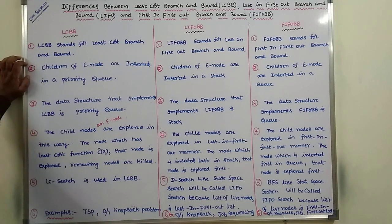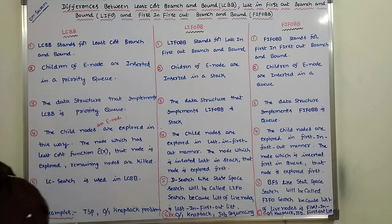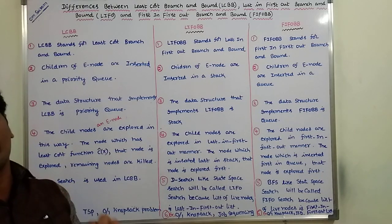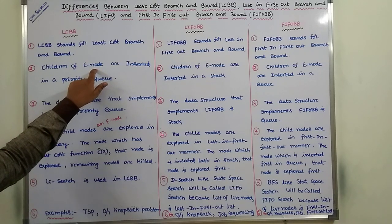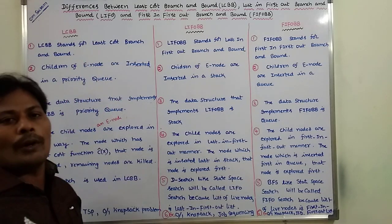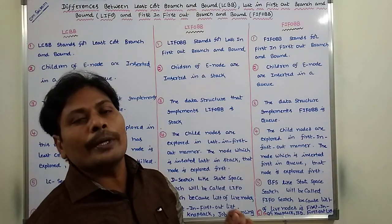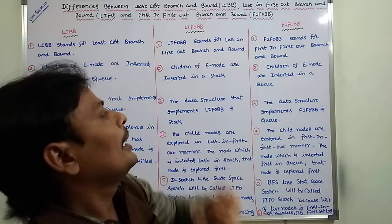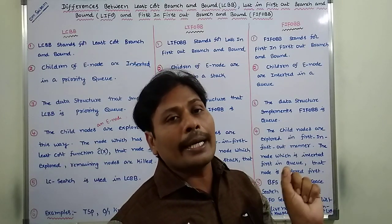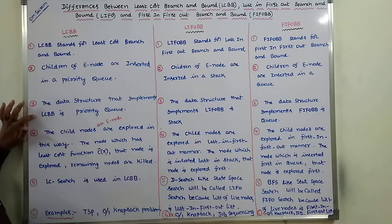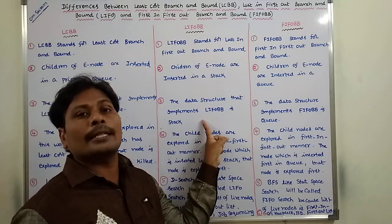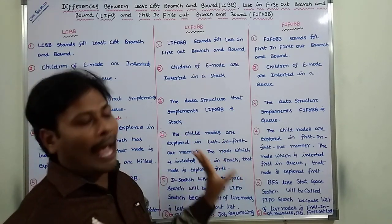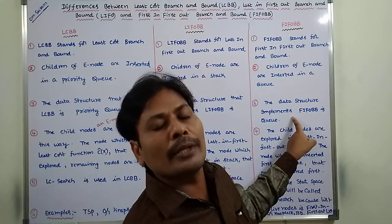In LCBB, the children of an E node are inserted into a priority queue. In LIFOBB, the children of an E node are inserted into a stack. In FIFOBB, the children of an E node are inserted into a queue. So the data structures used are: priority queue for least cost branch and bound, stack for LIFO branch and bound, and queue for FIFO branch and bound.